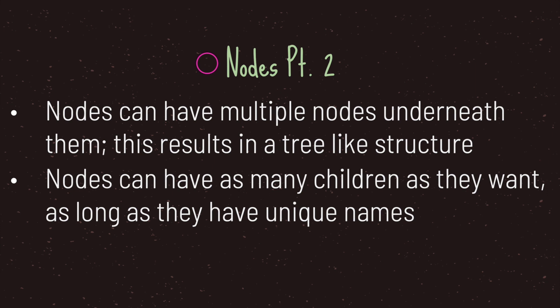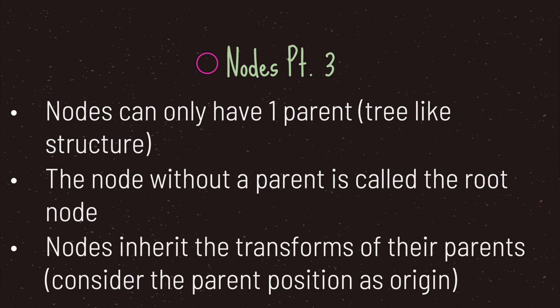This results in a tree-like structure. One rule to know is that a single node can have multiple children, but multiple children can only have one parent. On top of that, nodes and their children need to have their own unique names. Nodes need to have one parent, and this is where we get our tree-like structure.